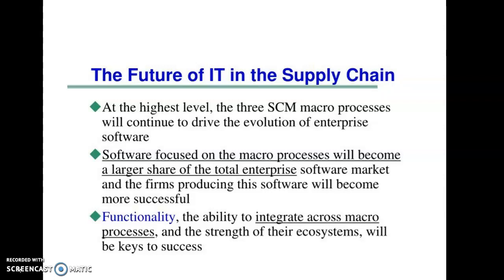Software companies are providing supply chain management software in such a way that it provides the ability to integrate functionalities between macro processes. The use of software in SCM will also provide a way to have better ecosystems. The software for SCM is making improvements in functionalities like processing orders, various payment methods, moving products from one place to another, and reducing paperwork.